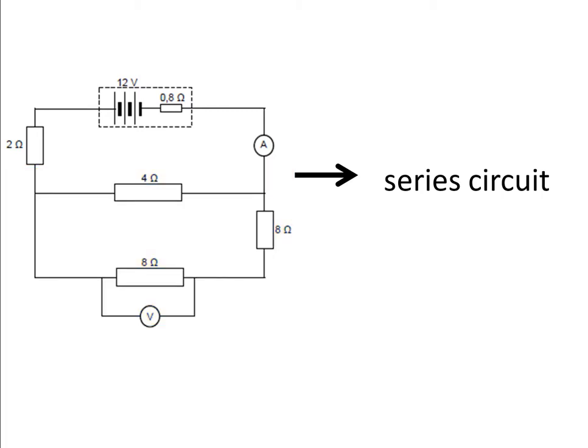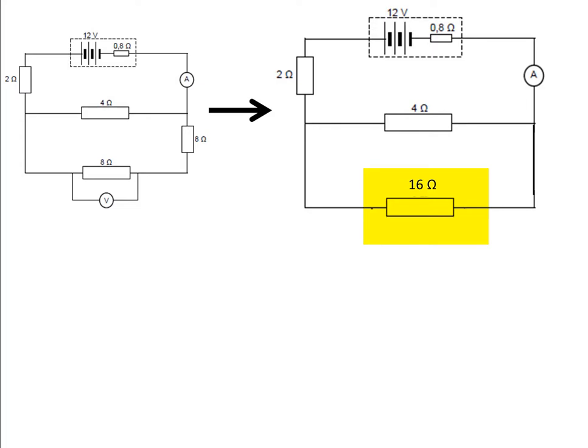We notice that in this circuit, one of the parallel branches has two resistors in series with one another. Because of that, we first need to replace these two resistors with a single resistor. It's very easy to calculate the equivalent resistance of resistors in series — we simply add their resistances. So we see here we have two 8-ohm resistors in series with one another in this branch.